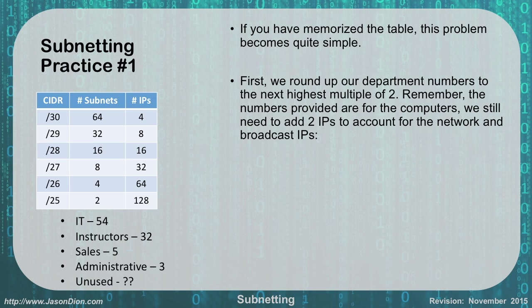If you memorize the table on the left, the problem becomes very easy. First, you're going to round up the number of departments to the next highest multiple of two. Remember that the numbers provided are for the computers, so we still need to add two IPs to account for the network and broadcast addresses. For IT, we're looking at 54 plus 2 which gives us 56 IPs, which then rounds up to 64 IPs that will be assigned.